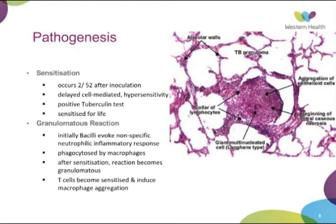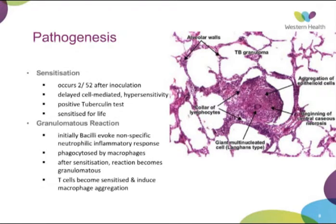Regarding pathogenesis: sensitisation occurs up to two weeks after inoculation. It is a delayed cell-mediated hypersensitivity reaction rather than an acute reaction. After sensitisation, you have a positive tuberculin skin test and are sensitised for life. The TB organism evokes a non-specific granulomatous reaction — organisms get phagocytised by macrophages, then T-cells become sensitised and induce further macrophage activity. The granulomas are described as cold abscesses in that they don't form pus cells. They are chronic in nature and have four components: epithelioid cells, giant cells, rim fibroblasts, and a central core of caseous necrosis, which is a combination of liquefactive and coagulative necrosis.